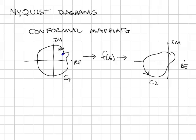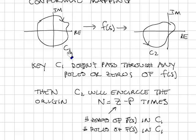This curve is in the complex plane, so to do the mapping we take each point on the curve, put it into the function that will result in another complex number, and plot the resulting complex number. We end up with another curve, C2. If we do the mapping from C1 through F of S to C2, and C1 does not pass through any of the poles or zeros of F of S — because if it passes through a pole, the curve it maps into would be infinite.